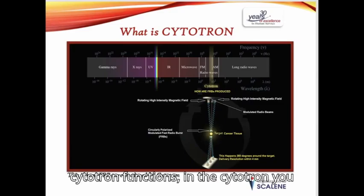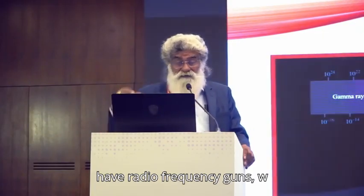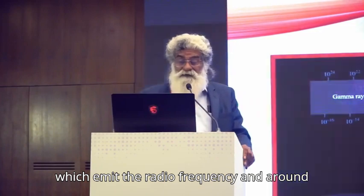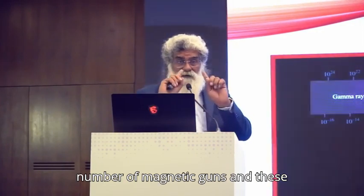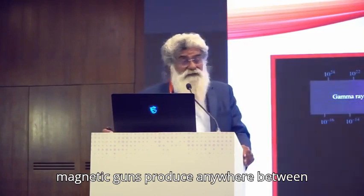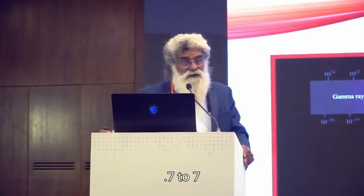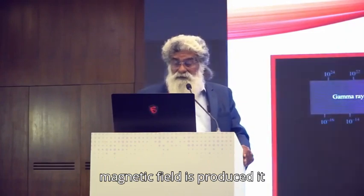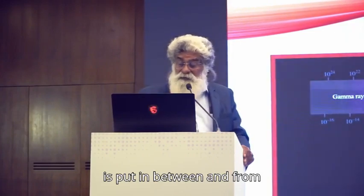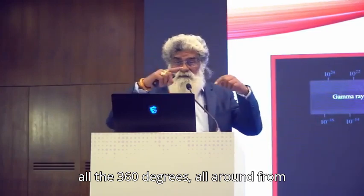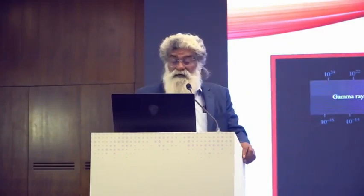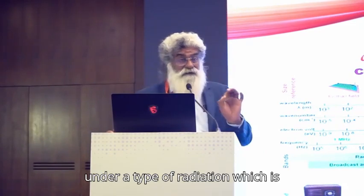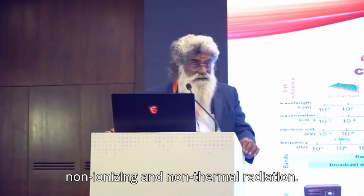These are the Cytotron functions. In Cytotron, we have the radio frequency coil, which emits tuned bursts of radio frequency. Around the radio frequency coil, there are a number of magnetic coils, and these magnetic coils produce anywhere between 0.7 to 0.7 Teslas of magnetic field. Once this magnetic field is produced, it is applied to the region of interest. The Cytotron comes under a type of radiation which is non-ionizing, non-thermal radiation, falling under the radio spectrum of non-ionizing radiation.